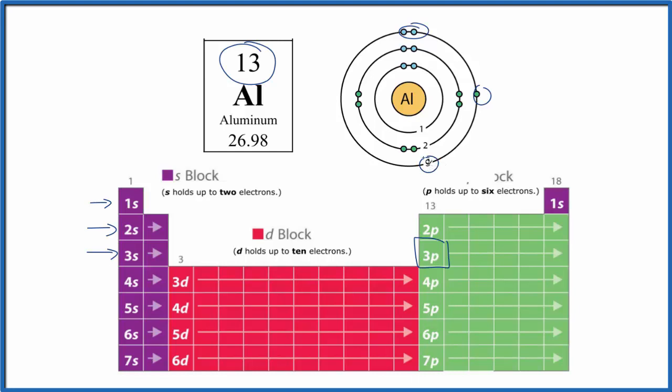That's the third energy level. These electrons in the highest energy level, they're important. They're called valence electrons and they're involved in chemical bonding.